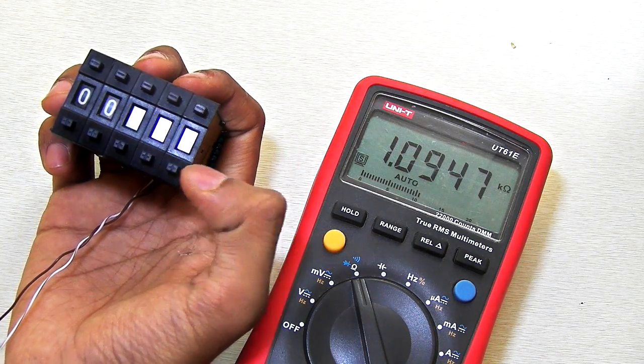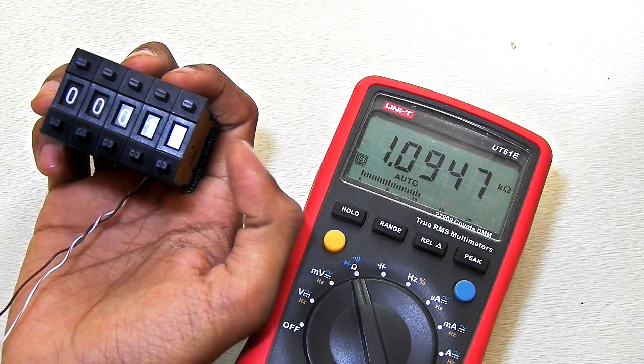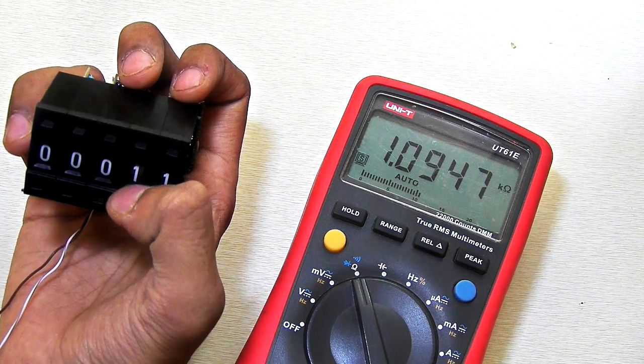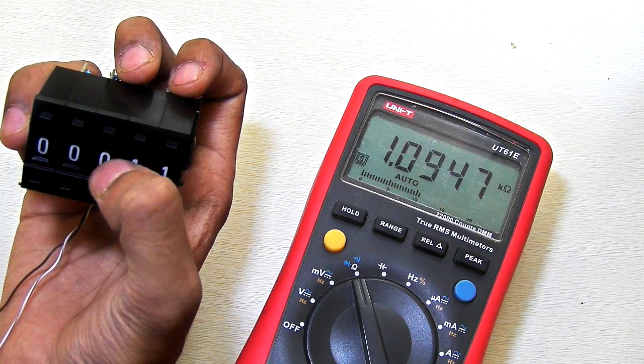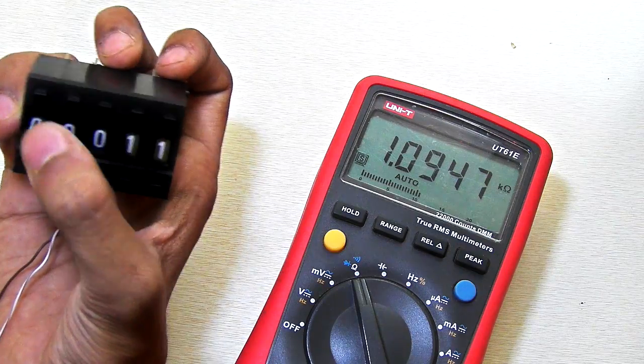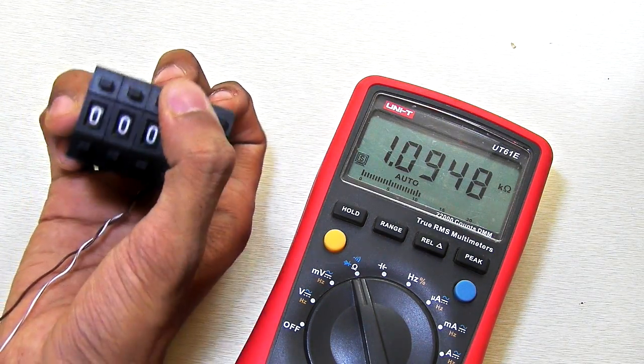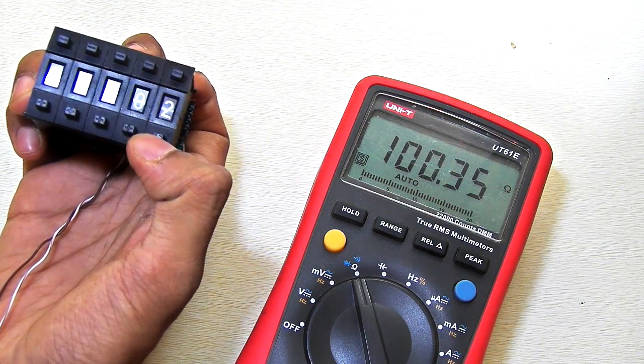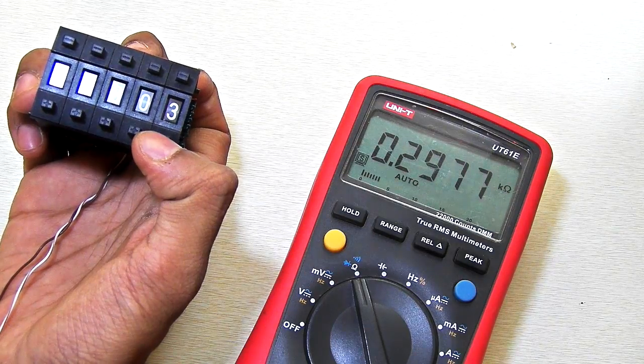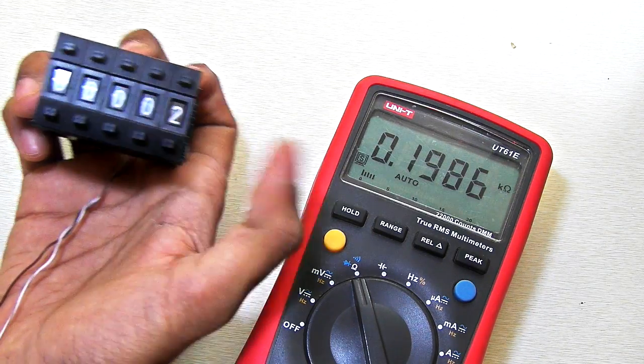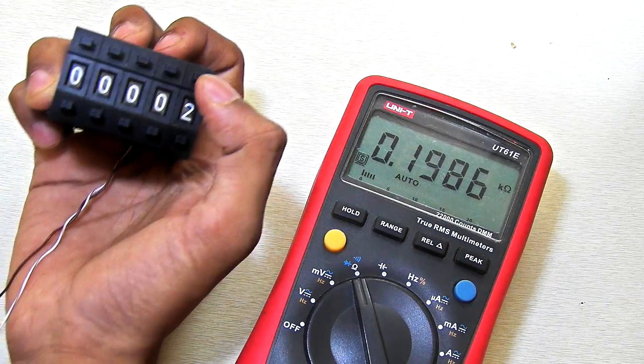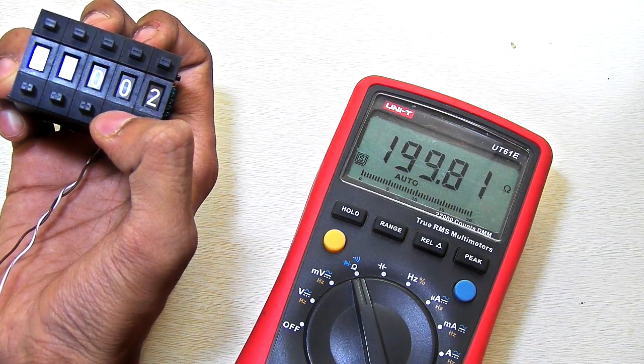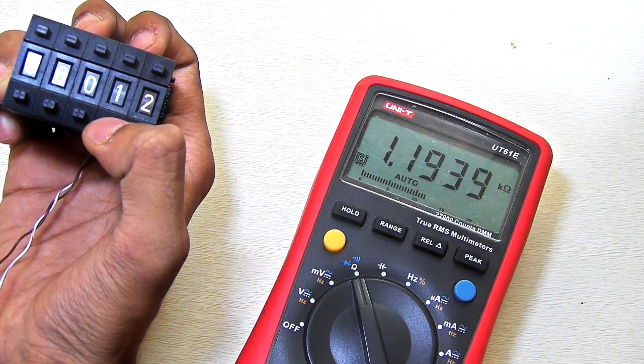Okay guys, so here we have our decade resistance box completed. As you can see, the first decade is 100 ohm, then the second one is 1k, the third one is 10k, then 100k and 1 mega ohm. So let's see. You can see now it is 100 ohm, then increase it to 200 ohms, 300 ohms, then 200 ohms again, 100 ohms. Then increase the next decade, it is now 1.2k.